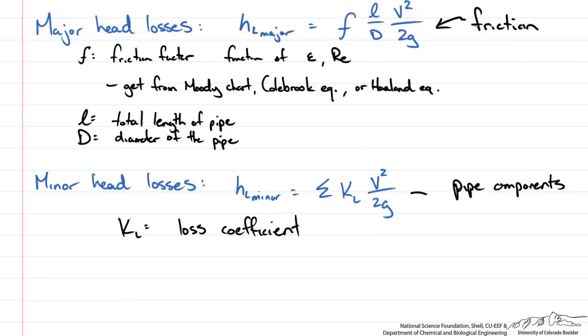The correlations for entrance, exit flow conditions, contractions, expansions, pipe coefficients, non-circular conduits are all well documented and can be looked up in appropriate tables.